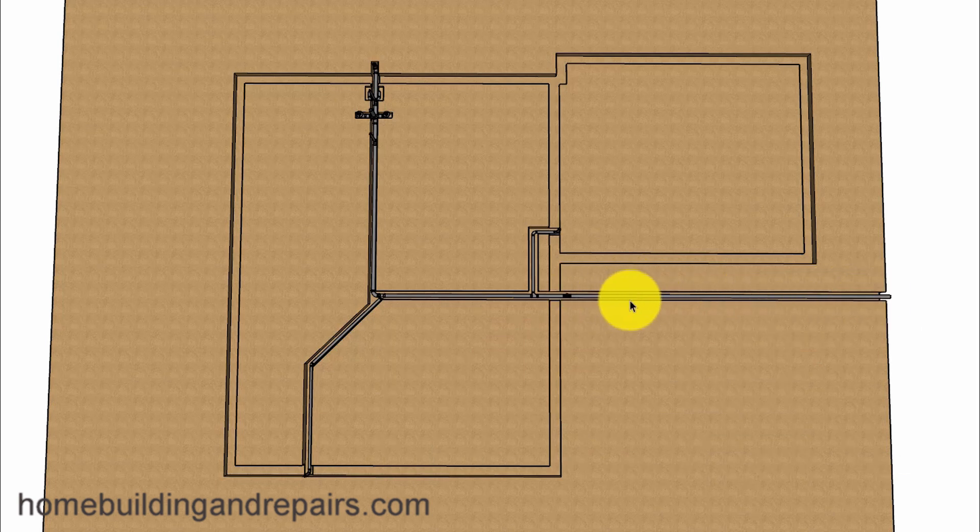However, this one right here cannot be smaller than this one here. It can be larger, it just can't be smaller. And that goes for other pipes that are going to be connecting into it. For example, if this is a three-inch line here, I cannot put a four-inch line over here. However, I can use the same size or smaller pipe.